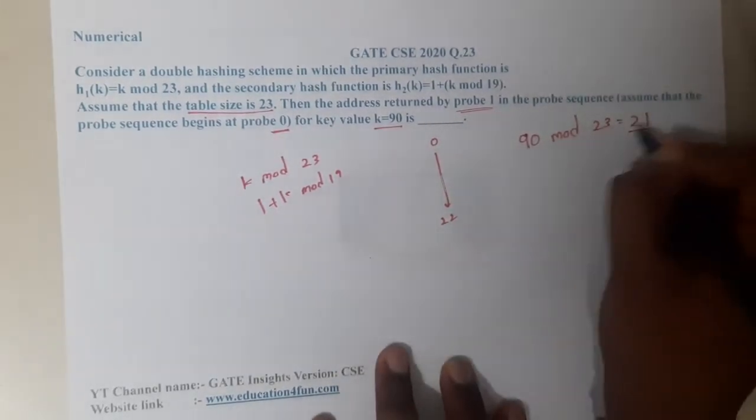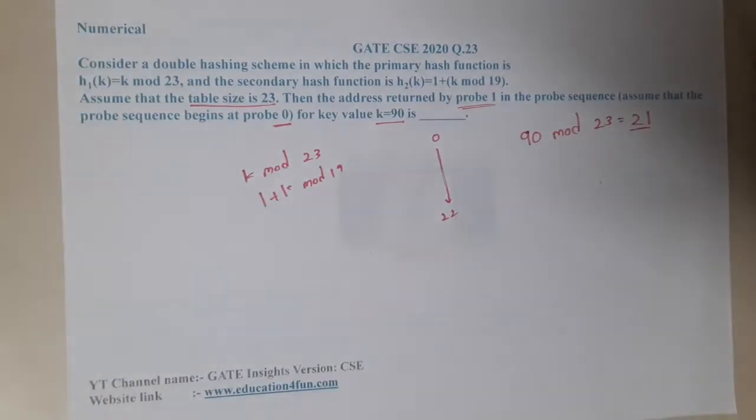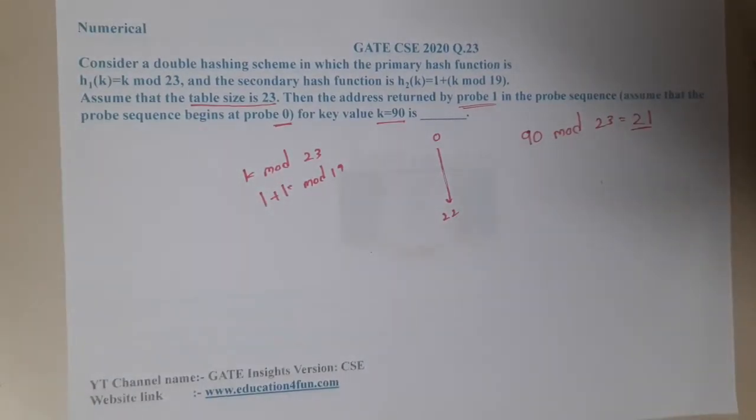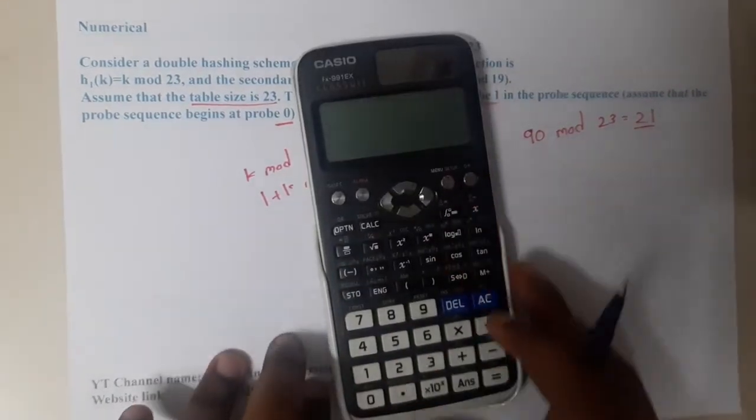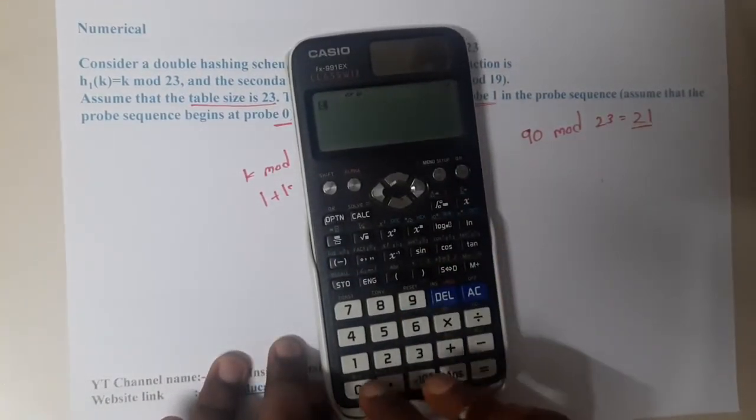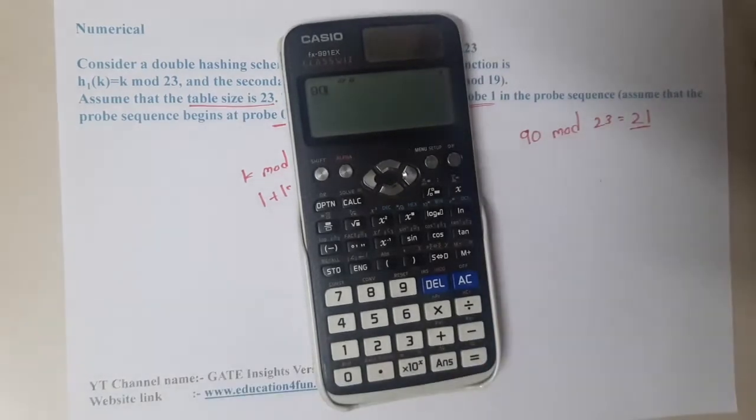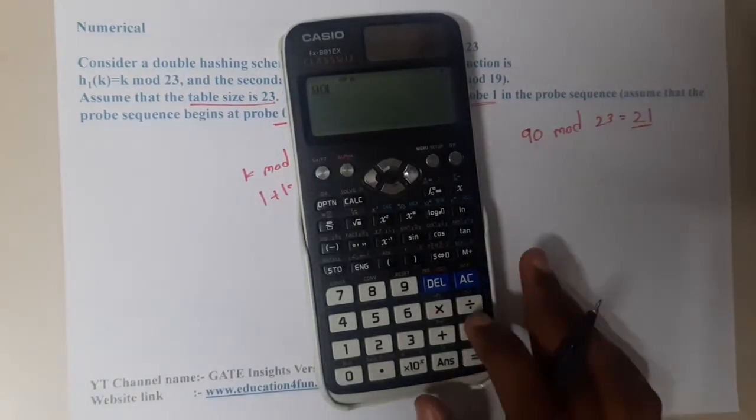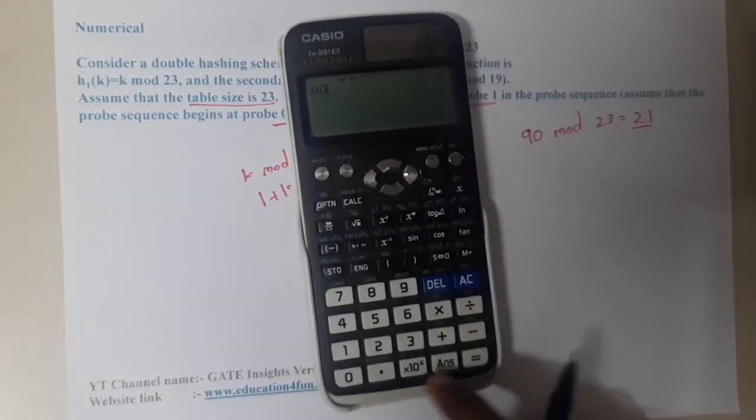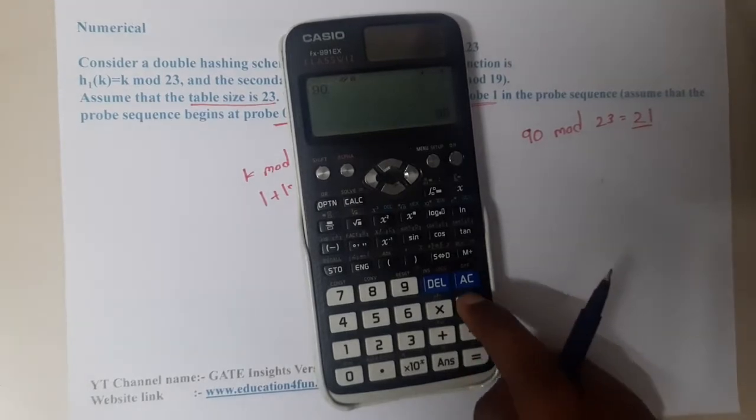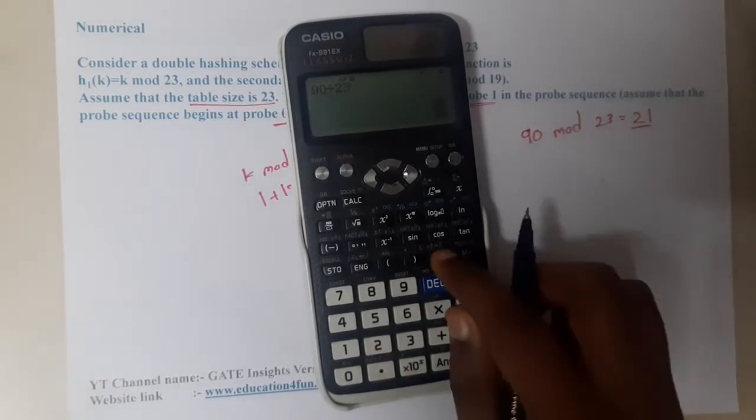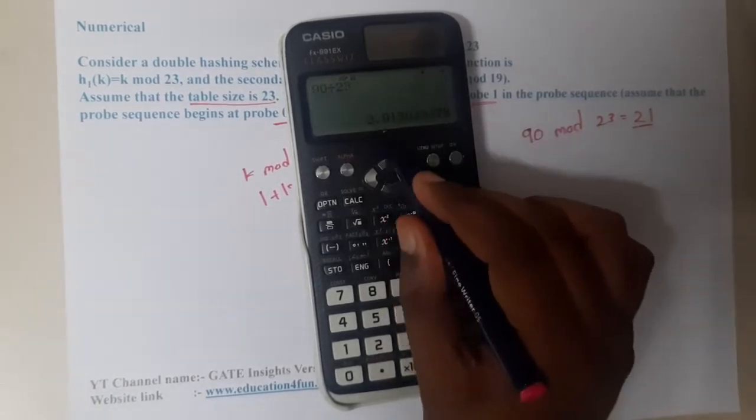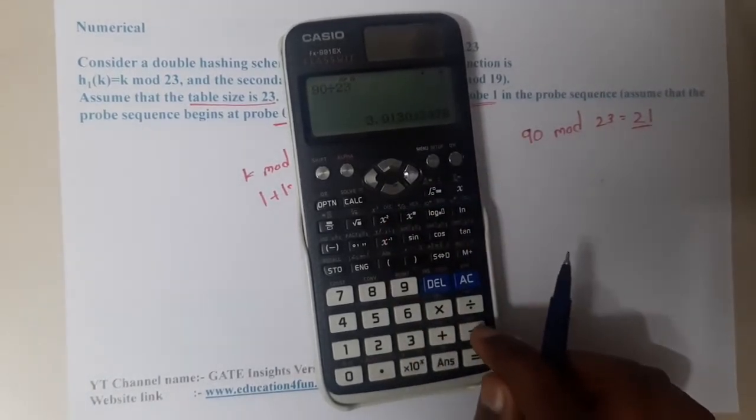You can check it in the calculator which is provided by GATE also. I'm showing it in calc. First, if you want to solve these mod functions, there is no direct mod button in calc. What you will do is divide 90 by 23. You will be writing in decimal, you got 3 point something. You will subtract that 3 from here, so you will be left out with that point something value.